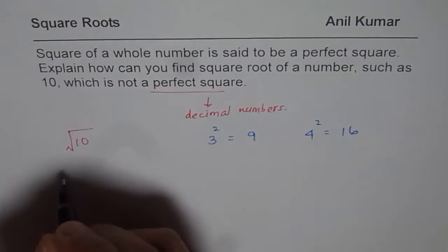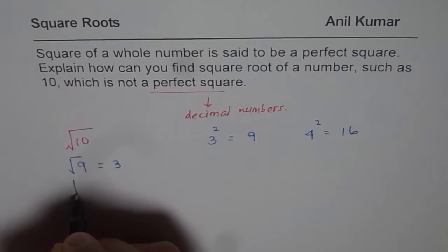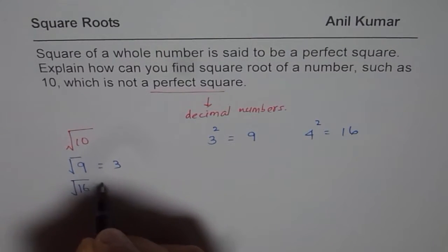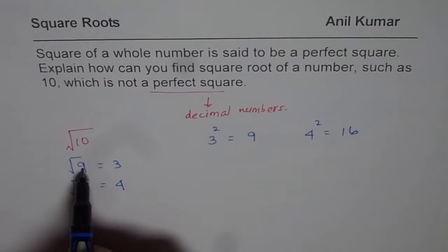As you know, 3 square is 9 and 4 square is 16. Now, 9 is close to 10. We know square root of 9 is 3 and so square root of 16 is 4.